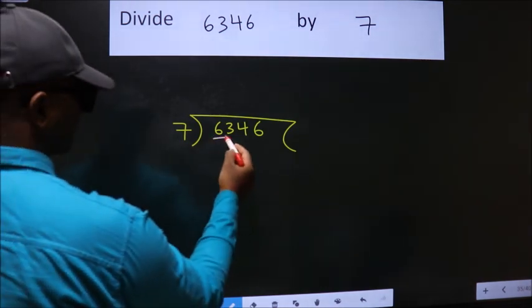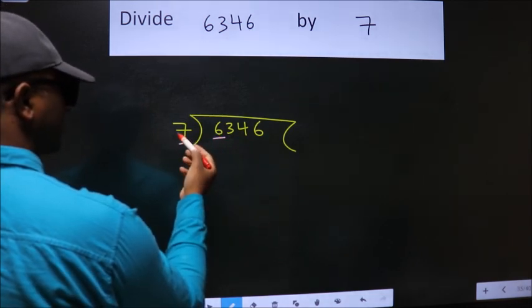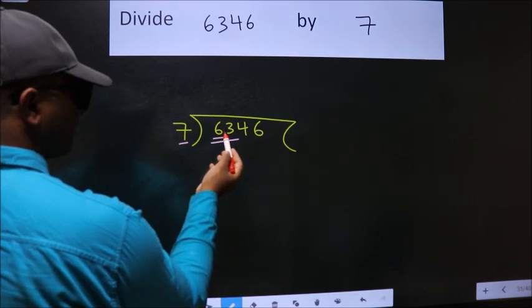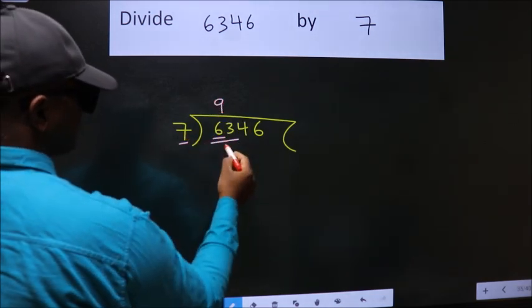Here we have 6. Here 7. 6 is smaller than 7, so we should take two numbers, 63. When do we get 63 in 7 table? 7 nines, 63.